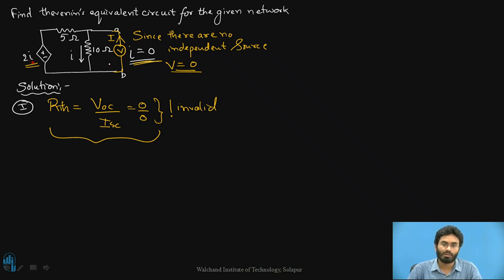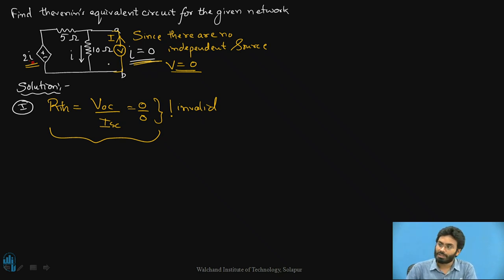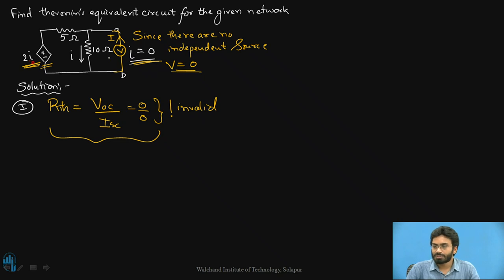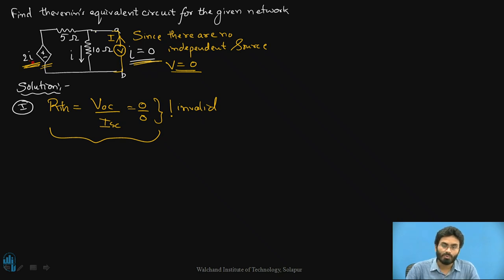We will then identify the ratio of V upon I to calculate the value of RTH. The process we follow is to apply 1 volt — a unit voltage — so that we are aware of exactly how much voltage we are applying. Some current will flow into the circuit, and based on that we can identify the ratio V upon I to calculate RTH. This is the standard process for calculating Thevenin's resistance in dependent source-based problems: apply a unit voltage source across the output terminals and measure the resulting current.